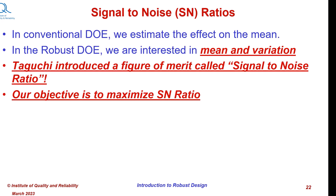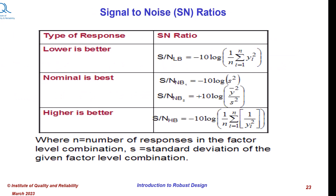Our objective is to always maximize the SN ratio for robust design. Signal-to-noise ratios for lower-is-better, nominal-is-best, and higher-is-better are shown in this slide. N is the number of responses in the factor-level combination, and S is the standard deviation of the given factor-level combination. These are used in the experimental design in various runs.